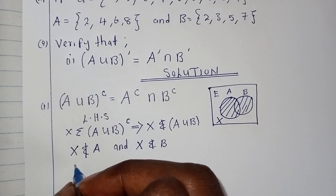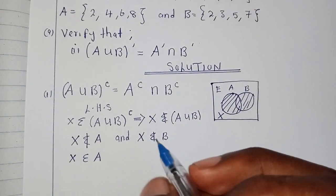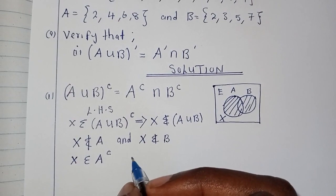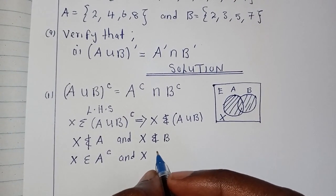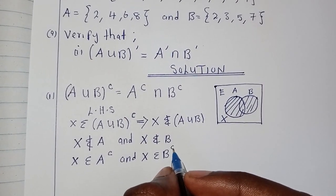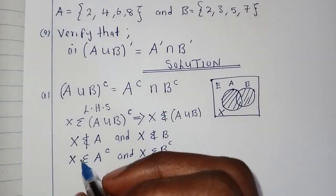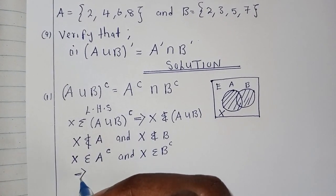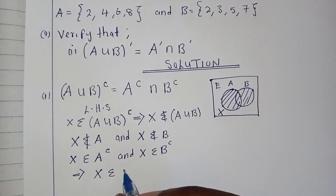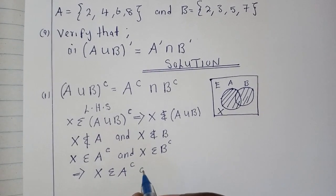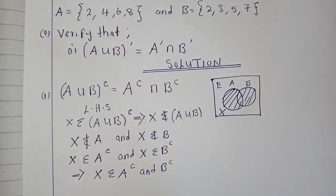We can now state that x is therefore a member of A complement, because it is outside A and B, and this same x is a member of B complement. That means x is a member of A complement and B complement.